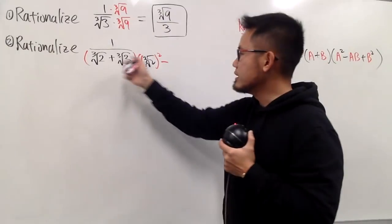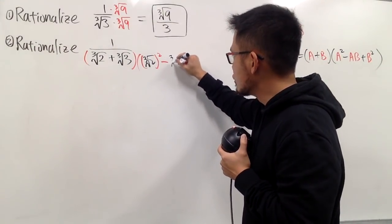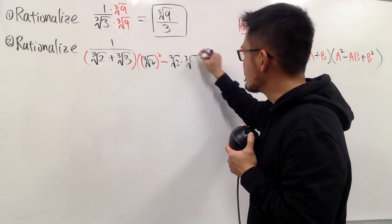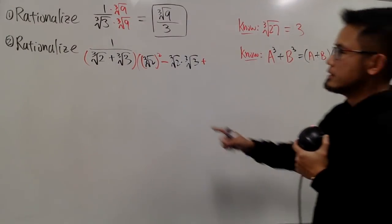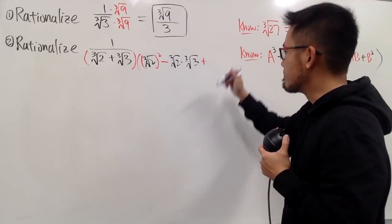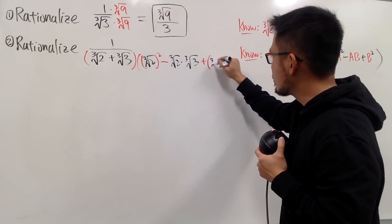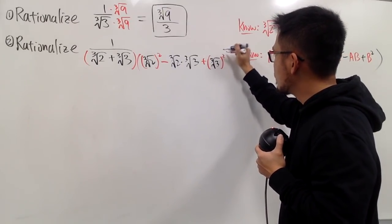So, I will just write this down for you guys. This is going to be the cube root of 2 times the cube root of 3. And lastly, we are going to add b squared. So, it's going to be this right here, and then to the second power. So, we will have the cube root of 3 squared, like that.